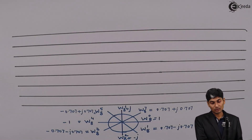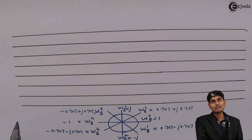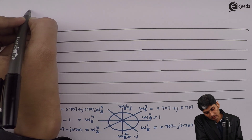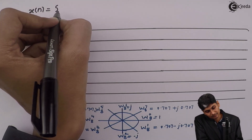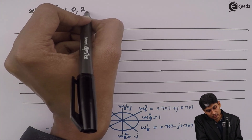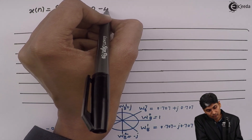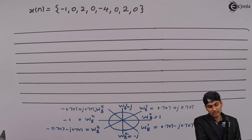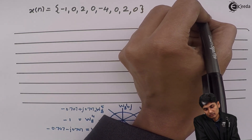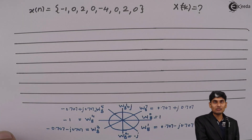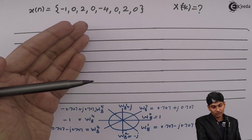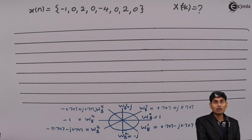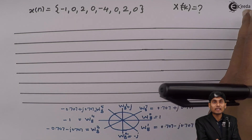Hi friends, today we are going to see how to solve a problem using DIT-FFT flow graph. The given x of n is: minus 1, 0, 2, 0, minus 4, 0, 2, 0. This is the given x of n and they are asking us to find X of k. The first step is to draw 8 parallel lines, and we will jot down how x of n and x of k will look.